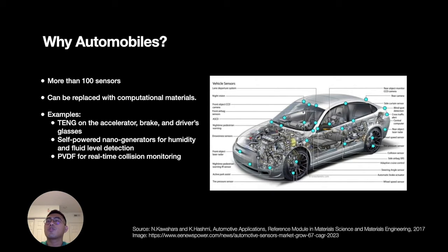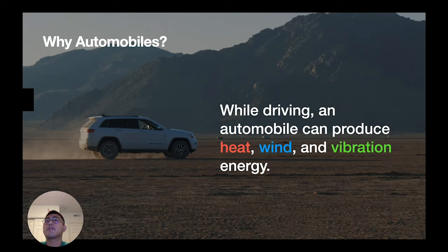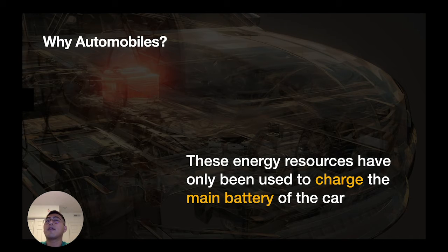So why focus on automobiles? Modern cars contain more than 100 sensors, and many current sensors can be replaced with computational materials. For example, current tire pressure sensors can be changed with pressure-sensitive triboelectric nanogenerators, or humidity and fluid level sensors can be replaced with self-powered nanogenerators. At the same time, automobiles produce heat, wind, and vibration energy while driving, and you can also add solar energy as an ambient energy source. We have many electrical elements requiring energy, and various energy sources generated while driving, but we have not paid attention to how we can utilize these available energy resources to fill this gap.